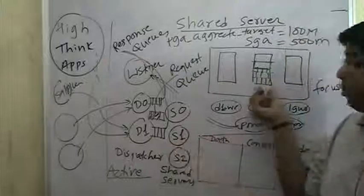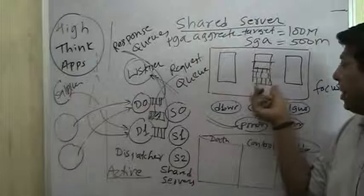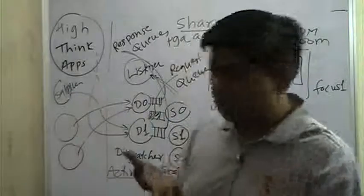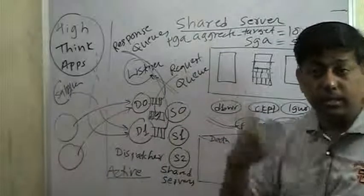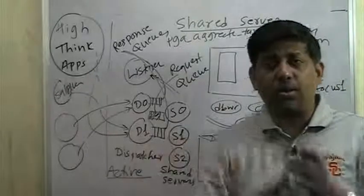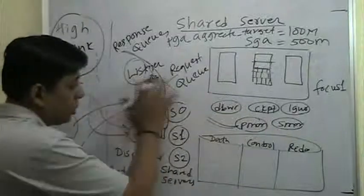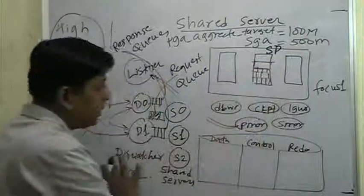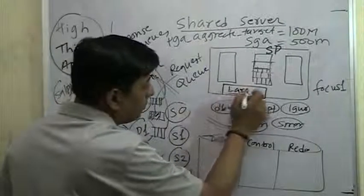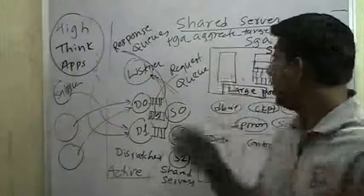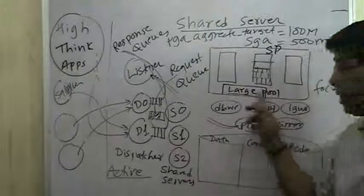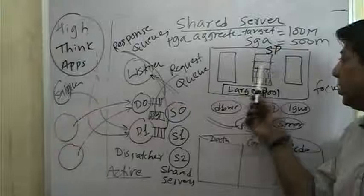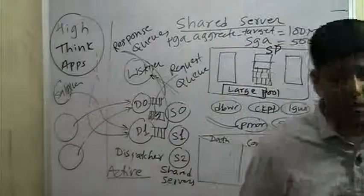The PGA size is reduced and goes inside what is called the large pool. Oracle says when implementing shared server architecture, do not overload the shared pool - instead keep PGAs in a separate area called large pool. Just like buffer cache, shared pool, and log buffer, there is another memory area called large pool. The moment you set up large pool by configuring the initialization parameter, all PGAs automatically go to the large pool instead of the shared pool.